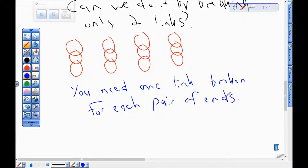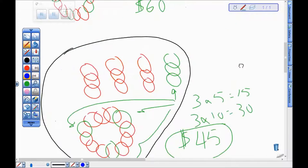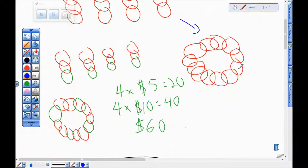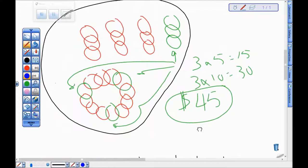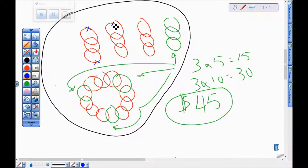So if I'm going to make this thing into a single closed loop, then I need a link to add together every pair of ends. You can see that up here in my first picture: I had one, two, three, four, five, six, seven, eight ends, so I needed four links to be able to connect those. I needed these four guys to connect those eight ends into a single closed bracelet. Similarly here, I had one, two, three, four, five, six ends and I needed three links to be able to connect them. So I need one link broken for every pair of ends.